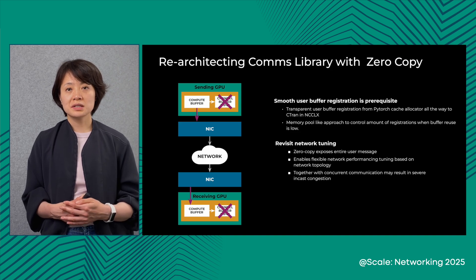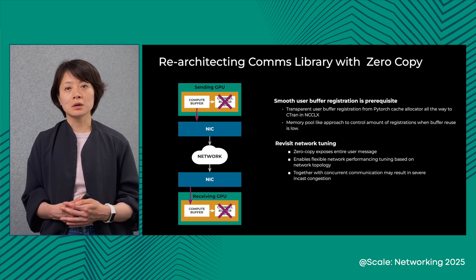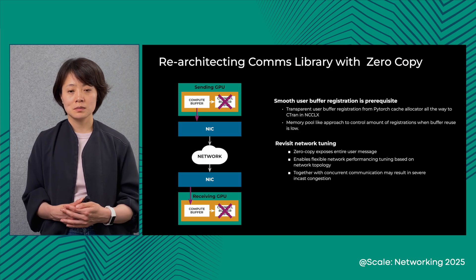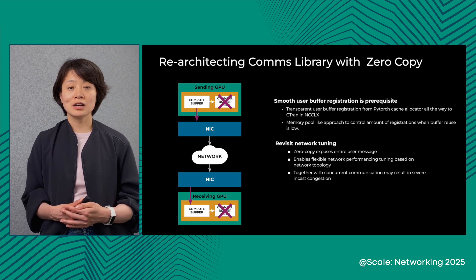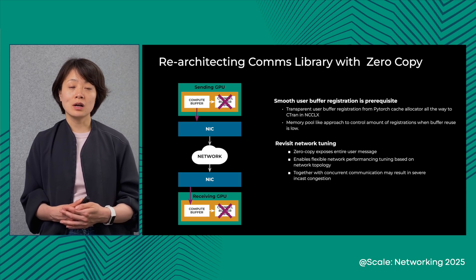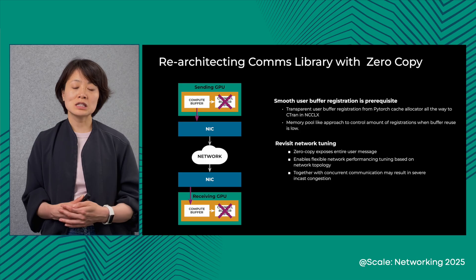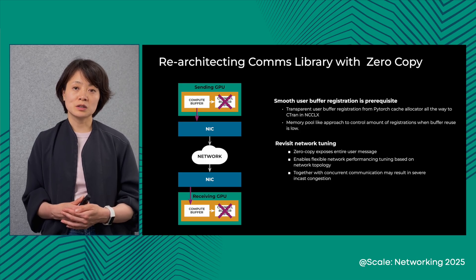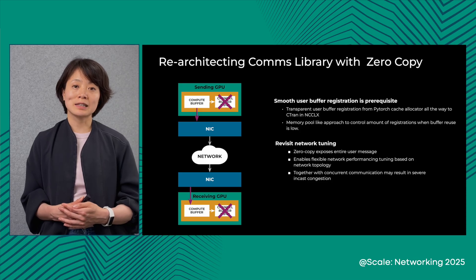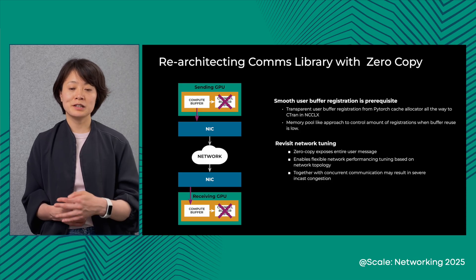Although in general we see much better performance with zero-copy at the network level, sometimes we see congestion on the receiver side if there are concurrent collectives being triggered to the network with too large a message. To address such issues, we need a core design with a network performance tuning layer with zero-copy in mind, which we will detail later in this talk.